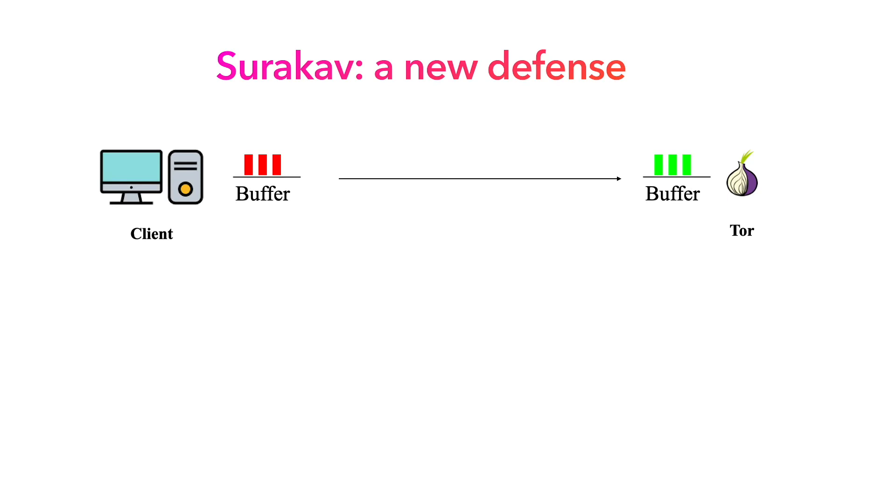In this work, we propose a new defense called Surakav. Surakav leverages a generative neural network that learns a variety of sending patterns from real network traces to guide the packet sending.